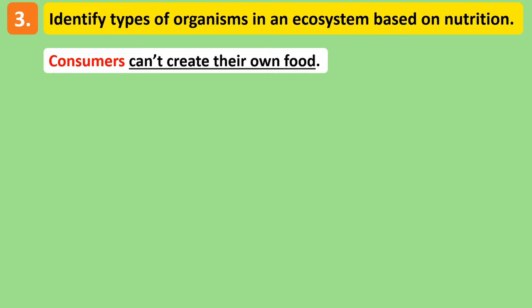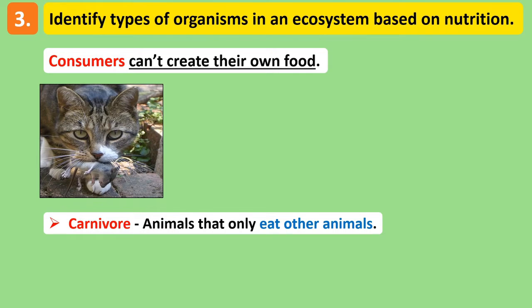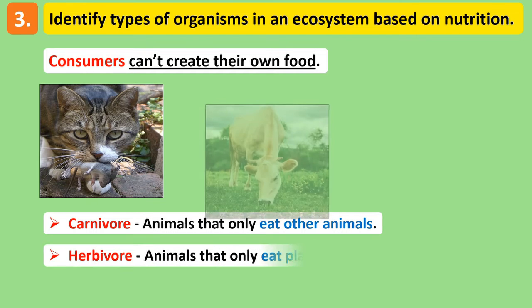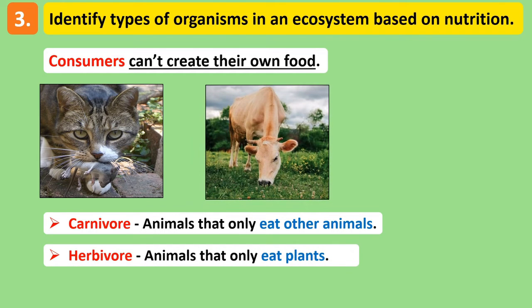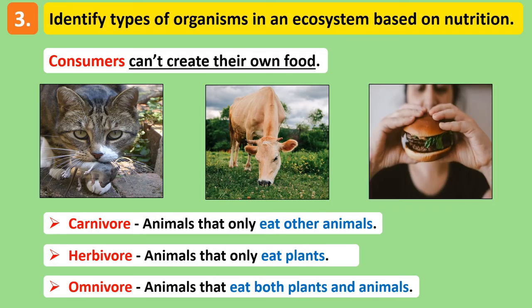There are three types of consumer we need to know. A carnivore is a consumer that eats only animals — they're meat eaters. A herbivore is a consumer that eats only plants, and an omnivore is a consumer that eats both plants and animals.